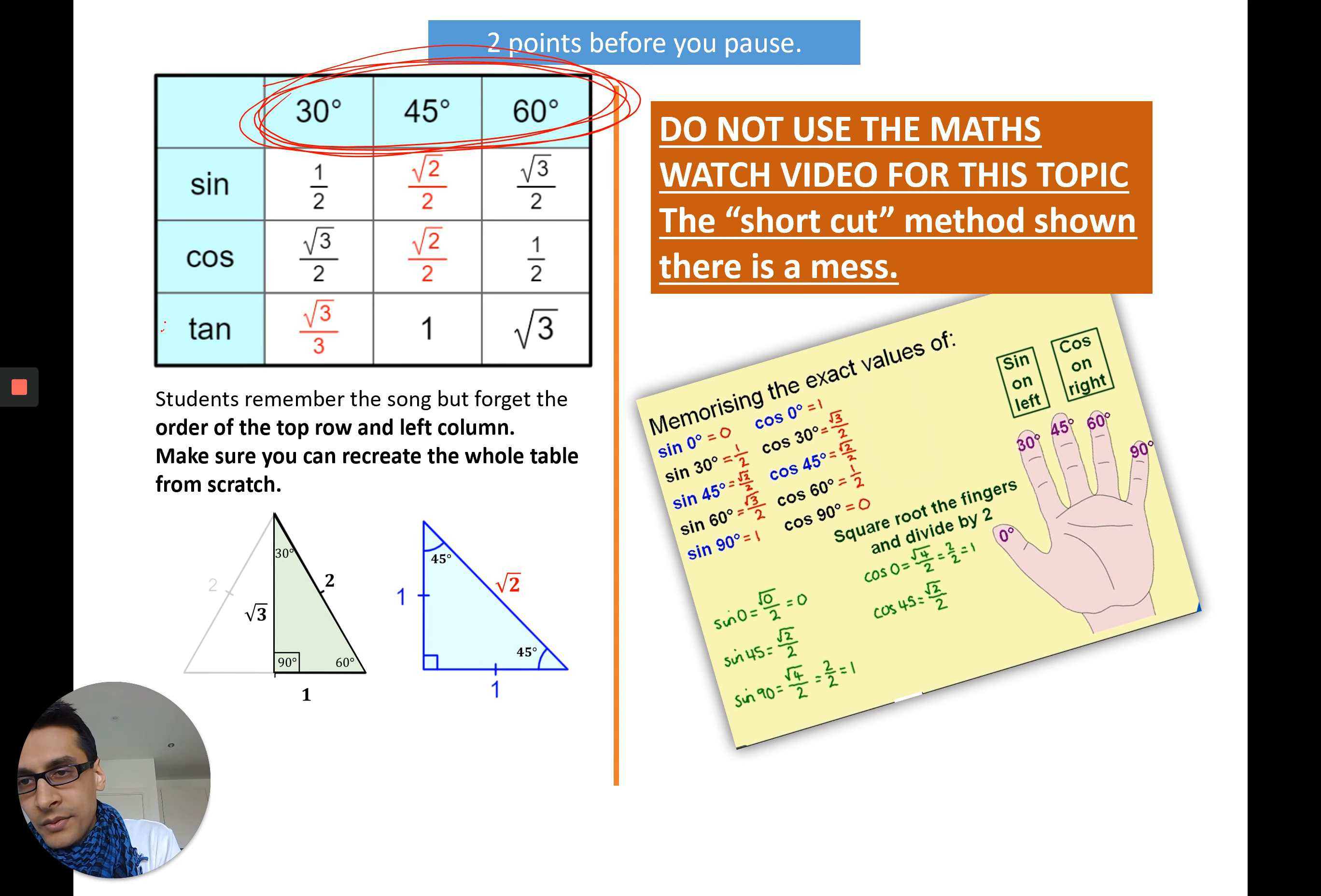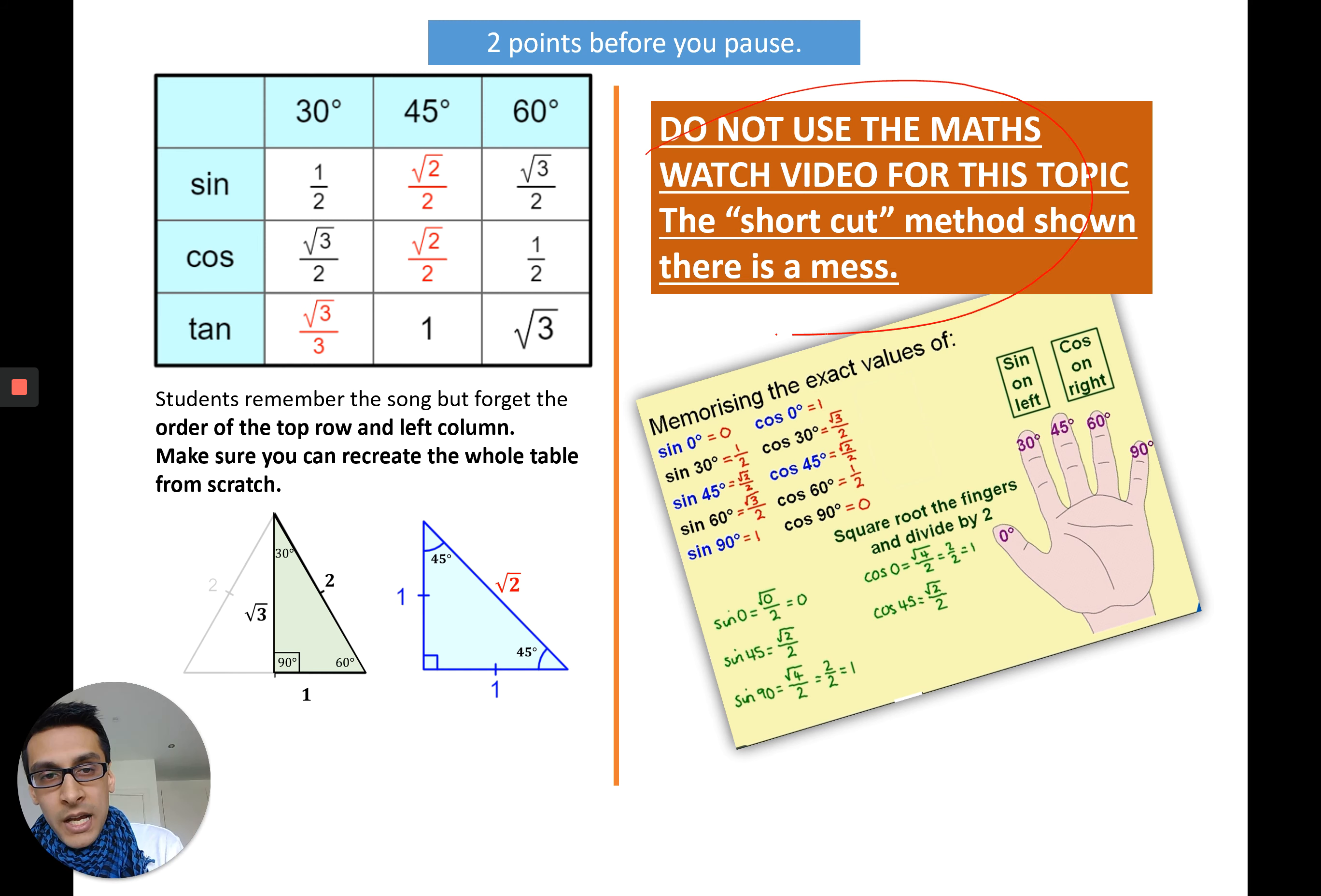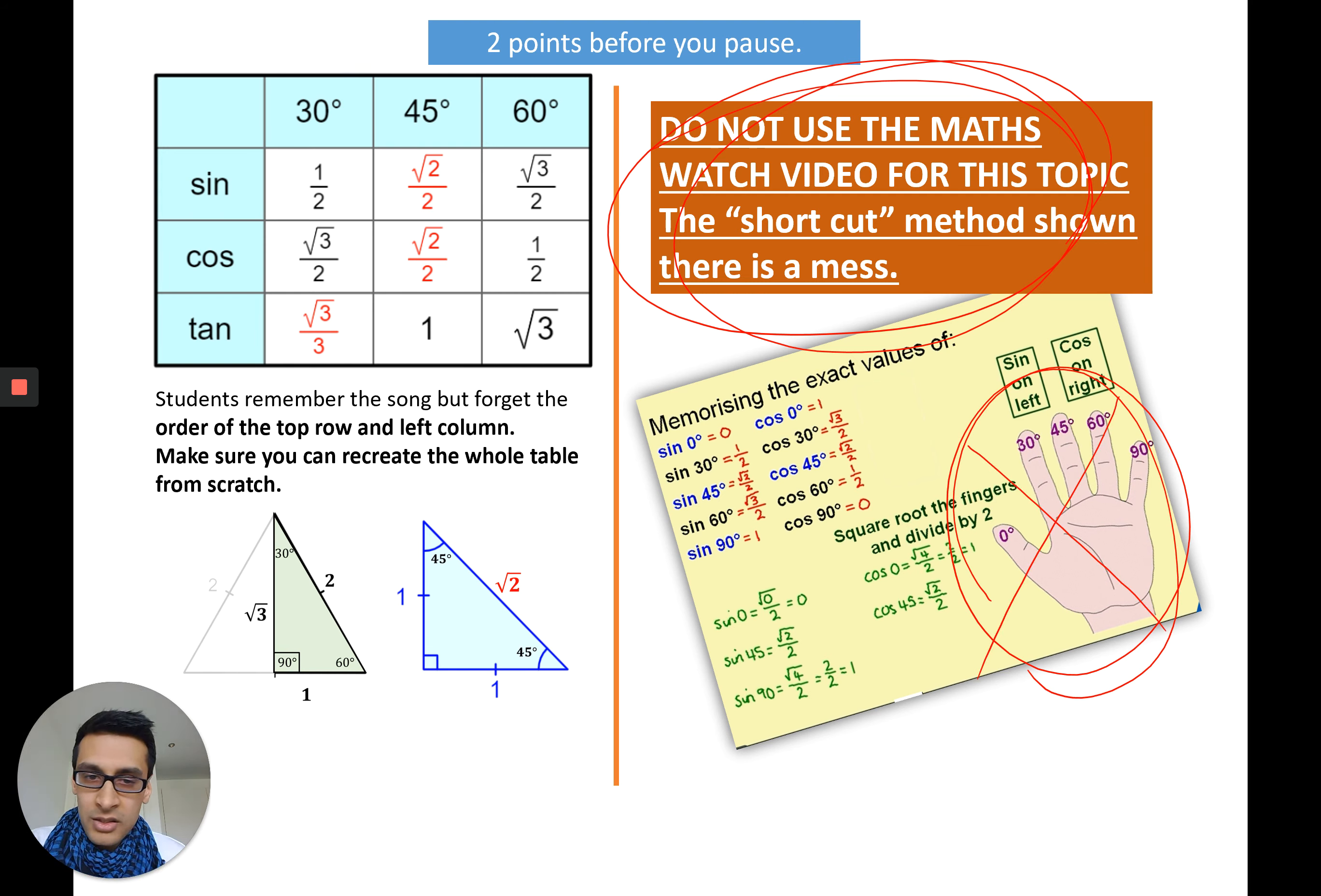The order of those numbers: sine, cos, and tan goes on the side, and 30, 45, and 60 across the top. If you don't like Paulo's song, I don't see why you wouldn't because I think it's going to be a summer hit for sure, you can just remember the triangles that I've gone through and you can sketch those out from here or you can go back in the video. Do not use Maths Watch. It has some random thing with using your fingers and hands and it's just a mess, so don't use that.